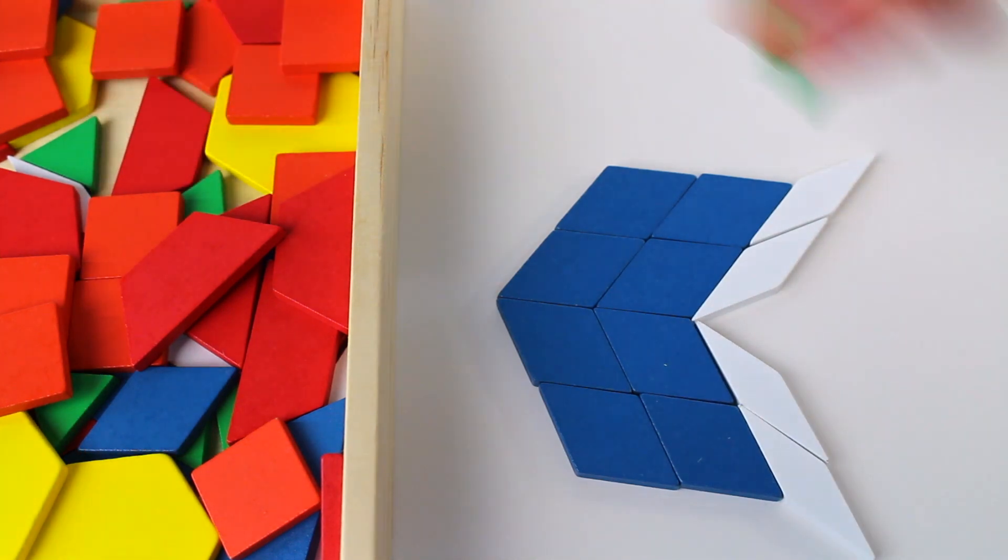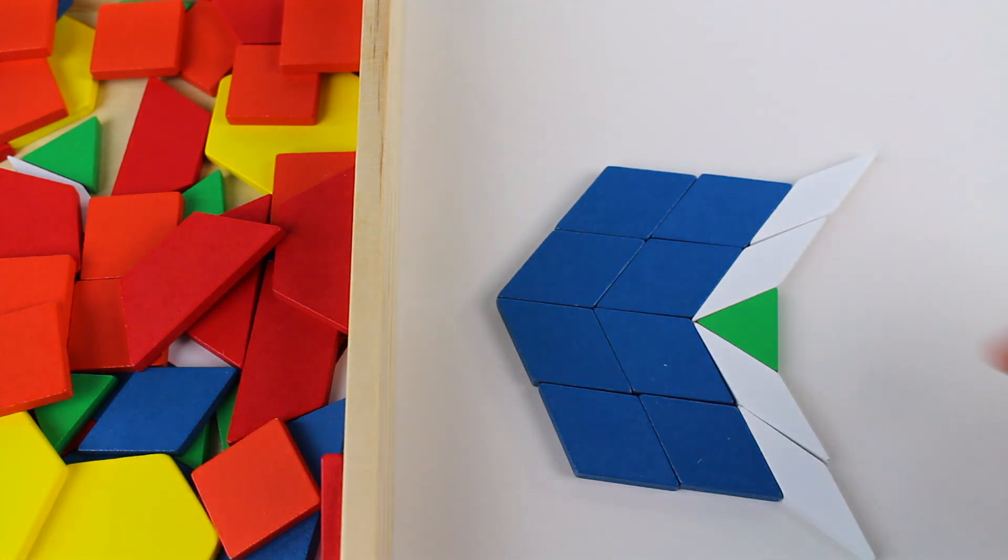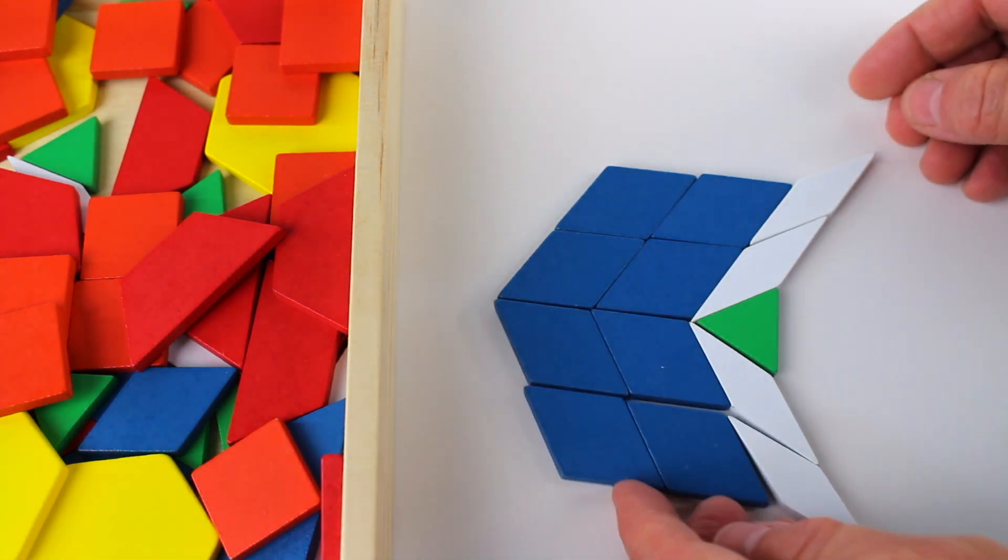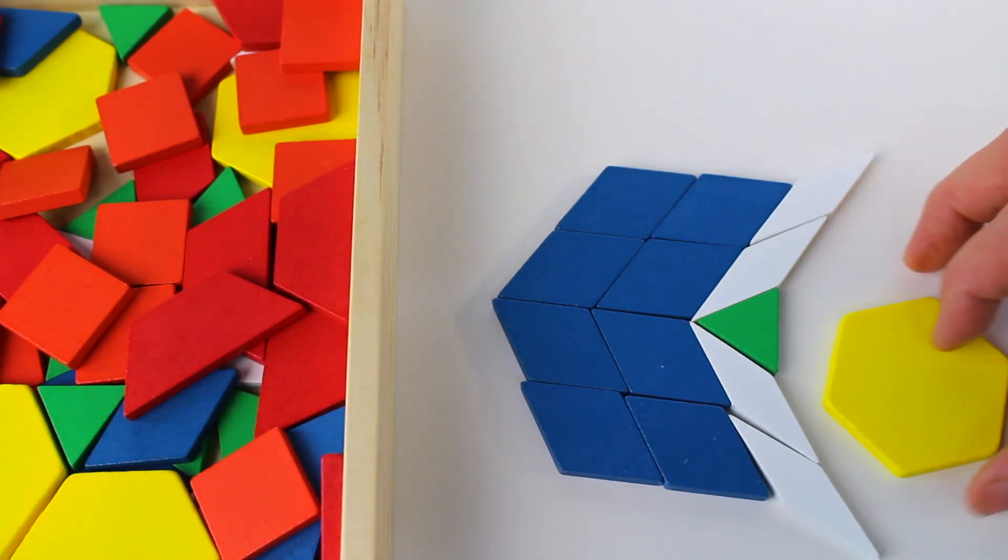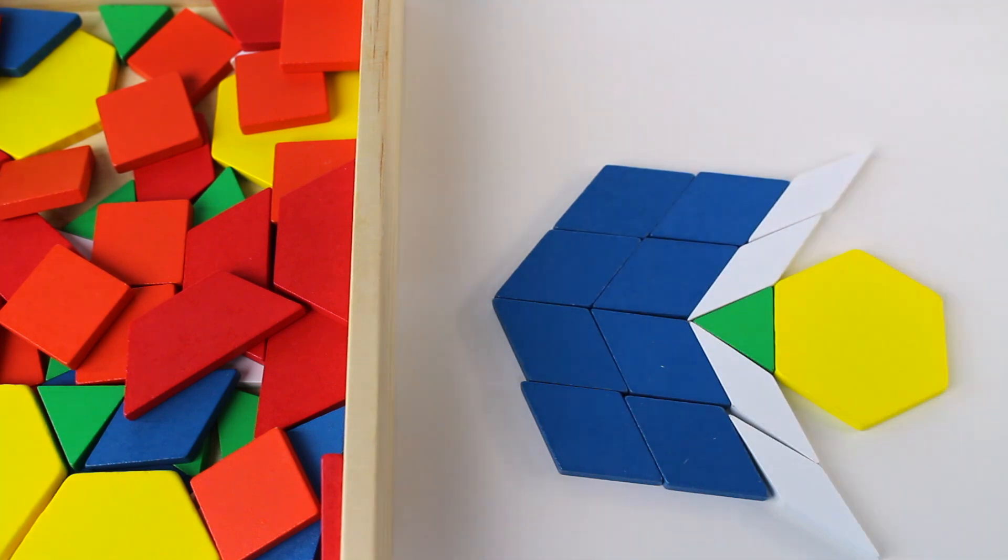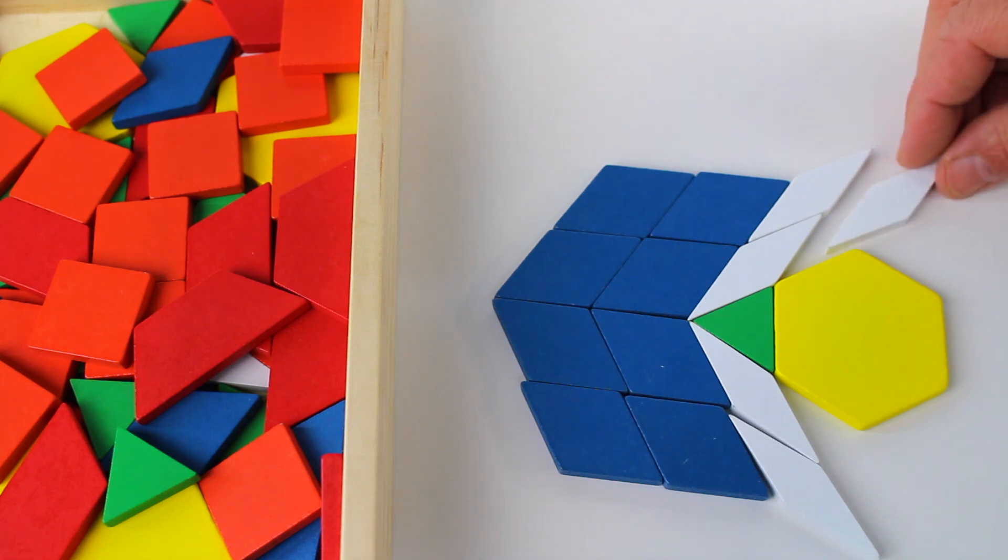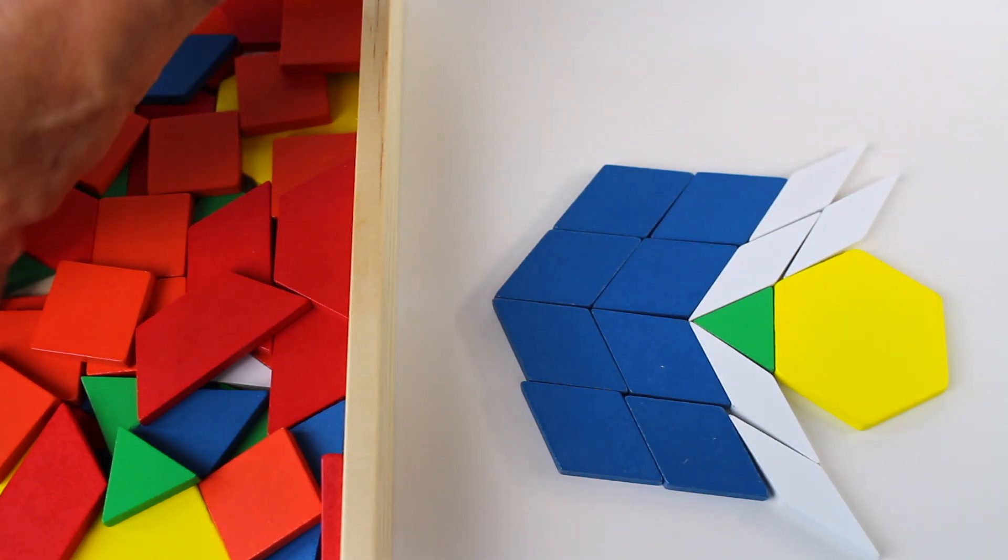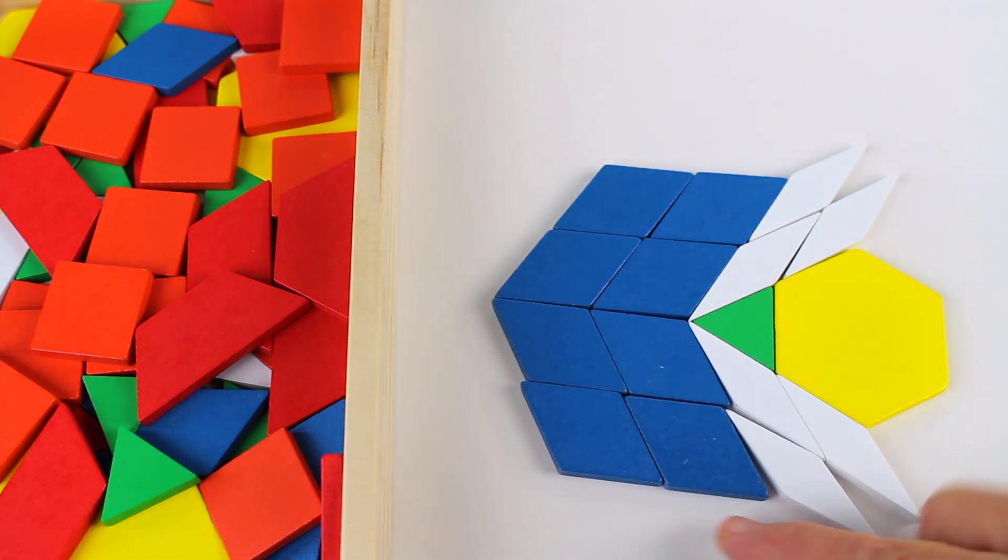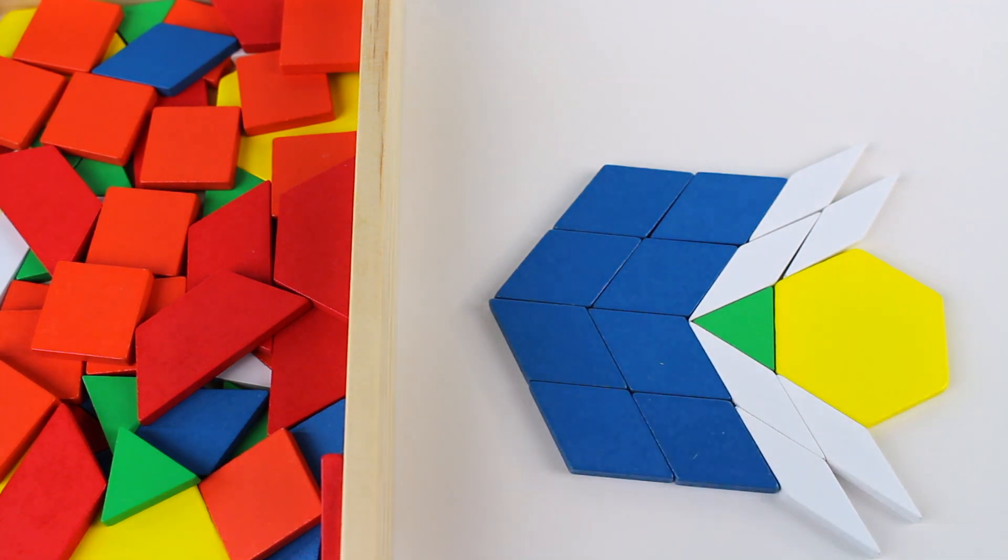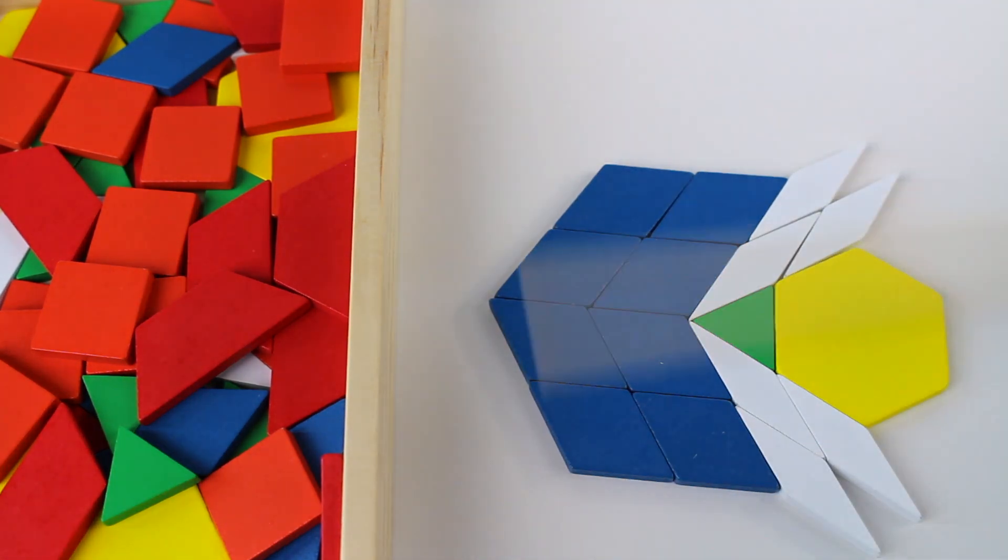Wow, look how neat that pattern is. Doesn't that look pretty? Wow, we can make all sorts of things. Now let's try a hexagon and more of the white rhombus. Wow, how nice is that? Now let's take them away.